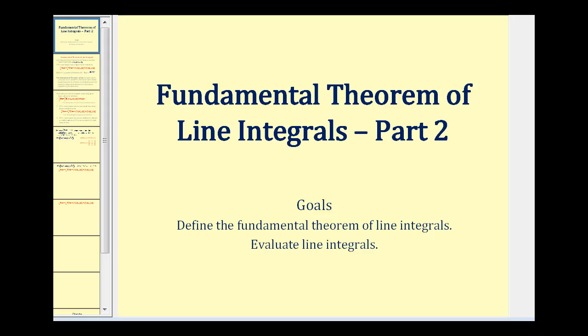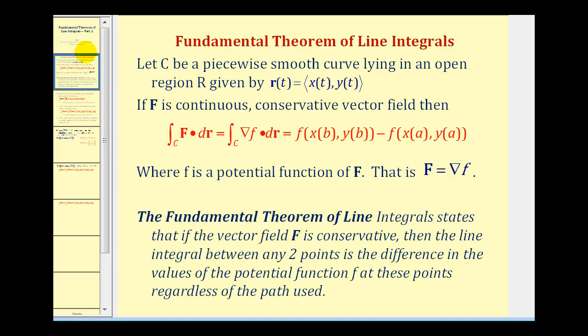Welcome to part two of the fundamental theorem of line integrals. Let's start with a quick review of the theorem and then take a look at an additional example. The fundamental theorem of line integrals states that if the vector field F is conservative, meaning it's equal to the gradient of little f, then the line integral between any two points is equal to the difference in the value of the potential function.